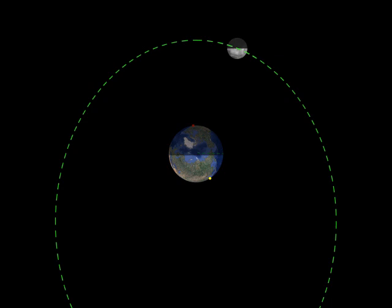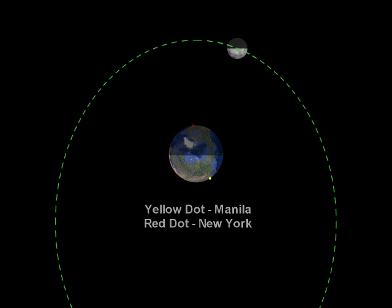The yellow dot that you see near the lower half is Manila, and the red dot on the dark part is New York. They're on opposite sides of the Earth.